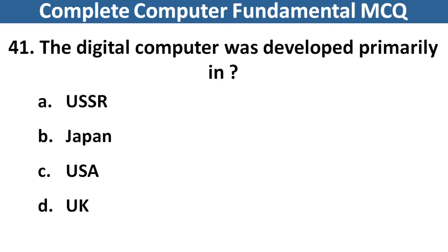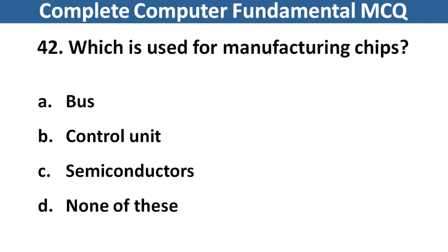The digital computer was developed primarily in? Right answer is option C, USA. Which of the following memories are used in manufacturing smartphones? Right answer is option C, Semiconductor.